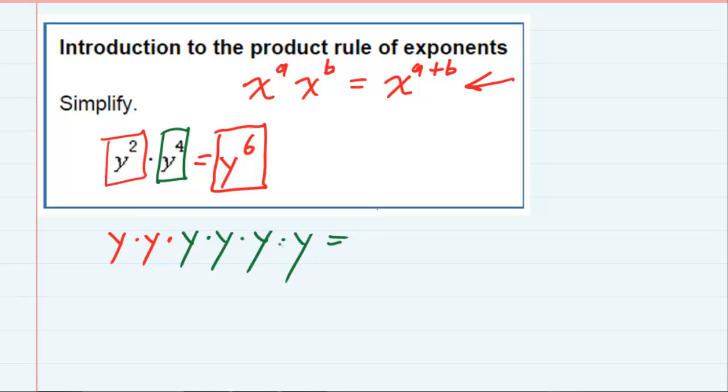we end up with some y's, and how many of them are being multiplied? There are six. So whether you write them all out or you apply the rule, we end up with the same solution.